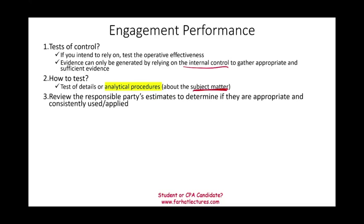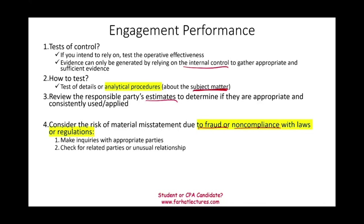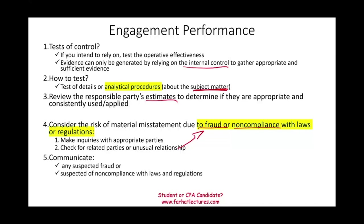Review the responsible party's estimates to see if they are appropriate and consistently used and applied. Consider the risk of material misstatement due to fraud or non-compliance with laws and regulations. How do you do that? Ask questions of the appropriate parties and check to see if there are any related parties or unusual relationships that might amount to fraud. You should communicate any suspected fraud and any suspected non-compliance with laws and regulations, especially if you are engaged to specifically deal with that.